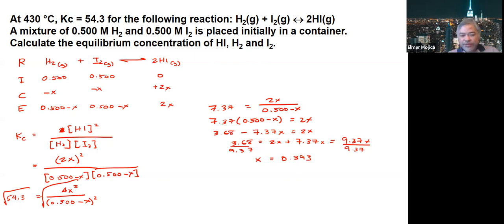Using this to get H2, which also equals I2: 0.5 minus 0.393 gives 0.107. HI equals 2X, which gives 0.786.